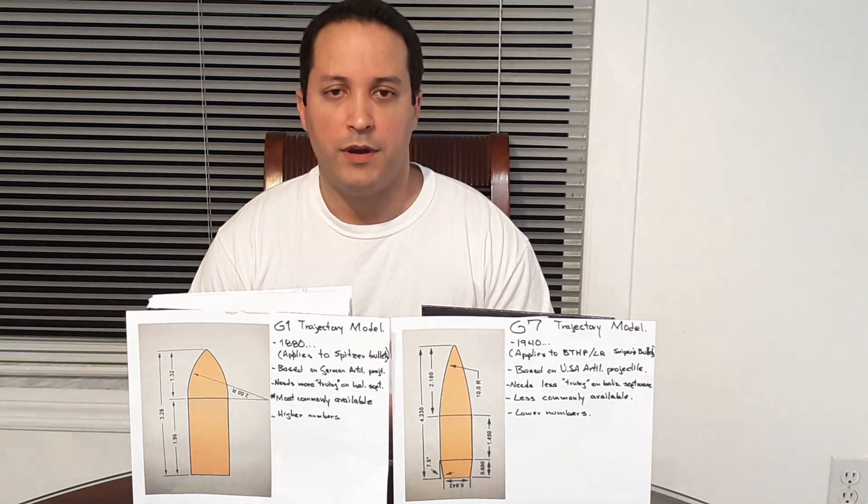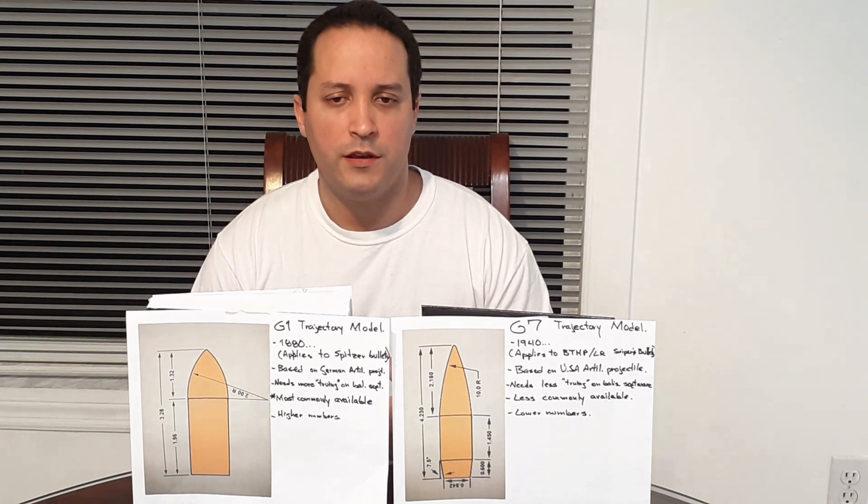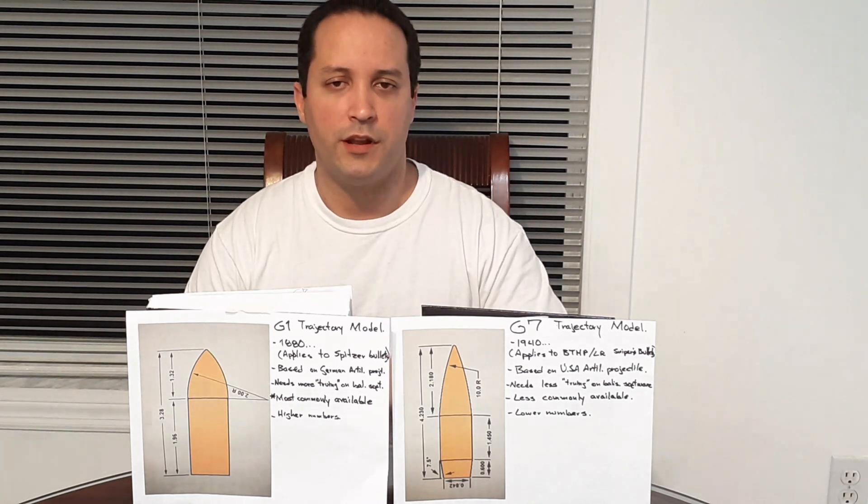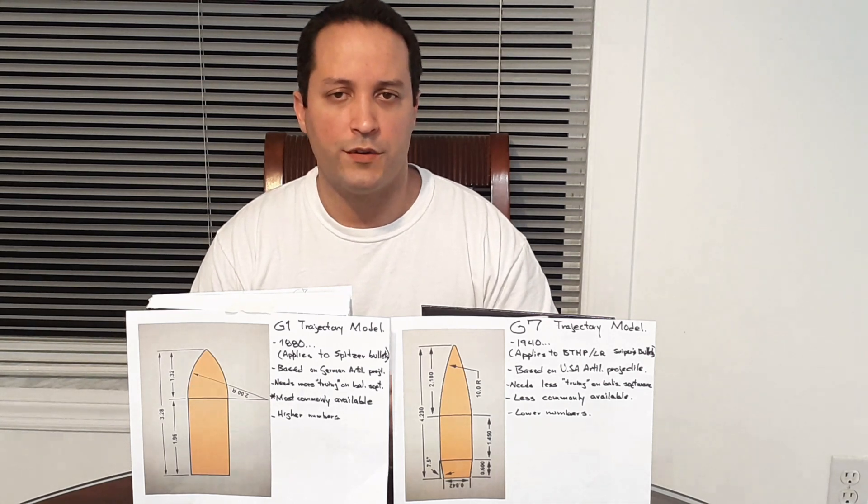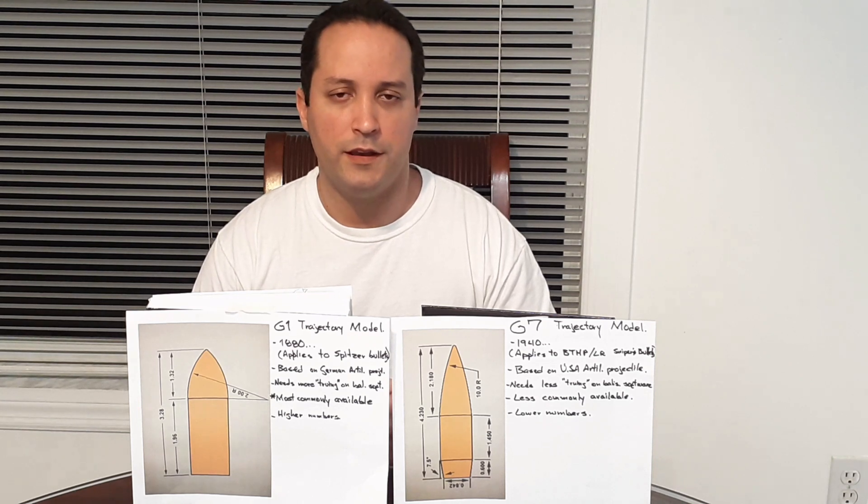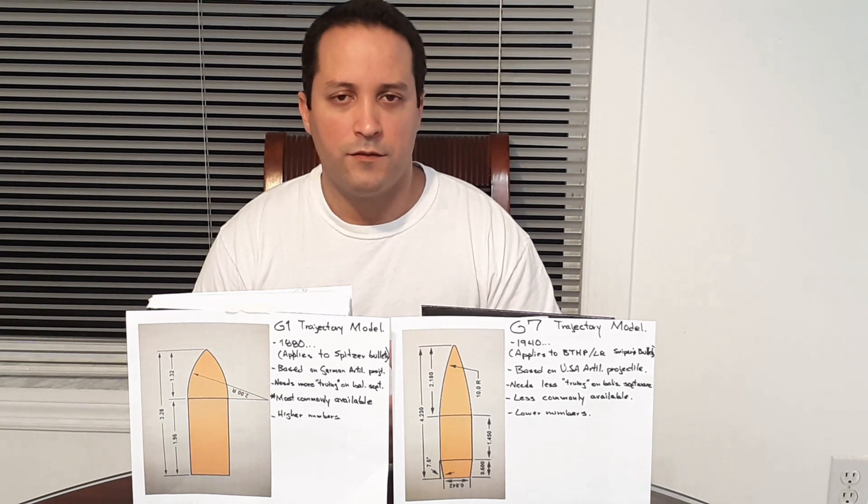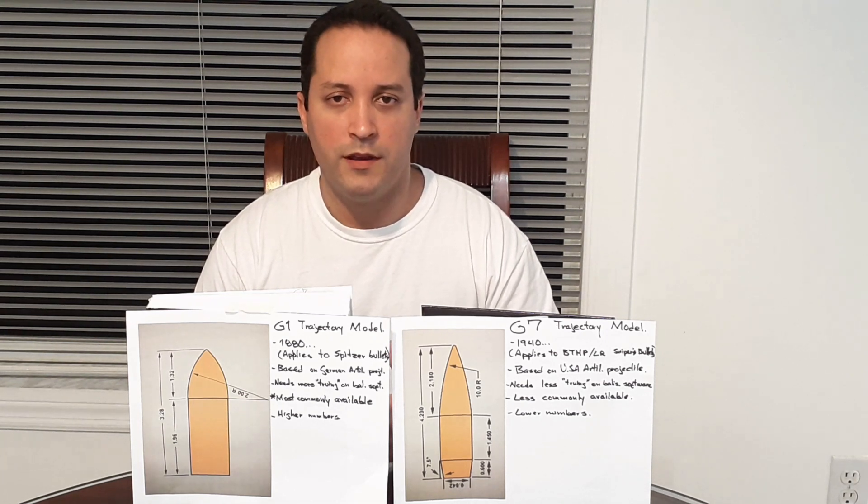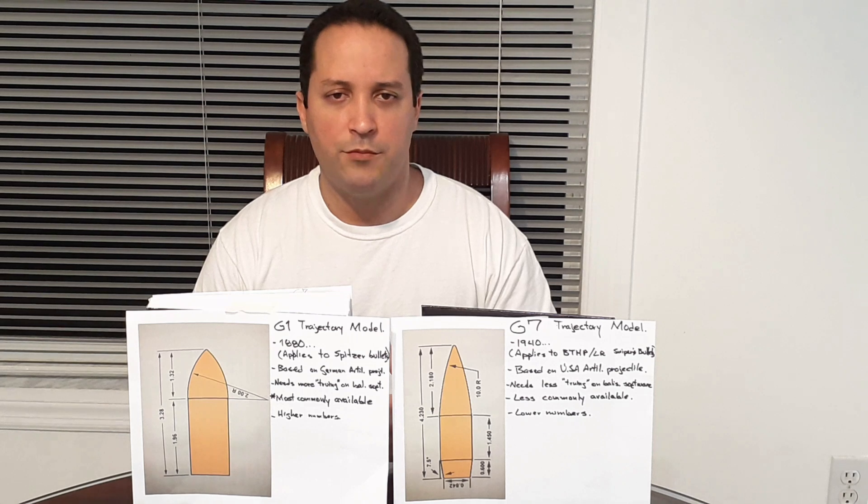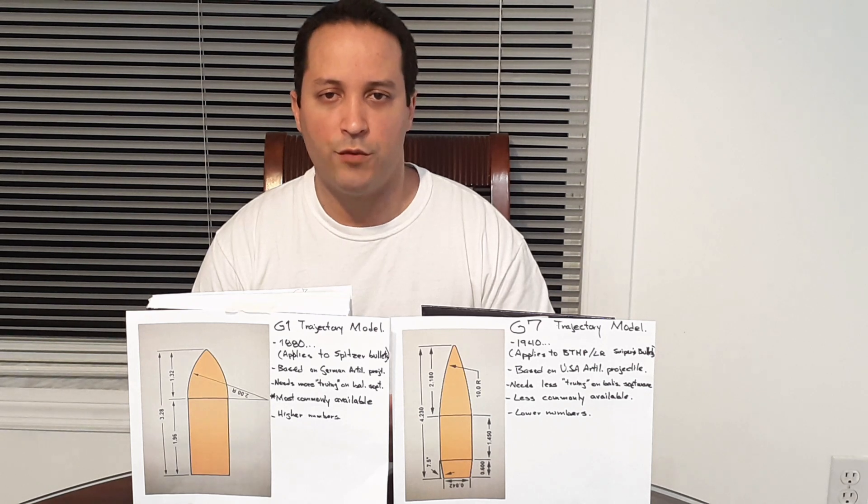As I stated before, the ballistic coefficient for a G1 trajectory model is going to be higher when compared to the G7 ballistic coefficient. Please do not cross values. If your software asks for G1, do not put G7, otherwise extended range will be really low. If it asks for G7, do not put G1, or the table will show you engaging targets at 2,000 or 3,000 yards, which is absurd.